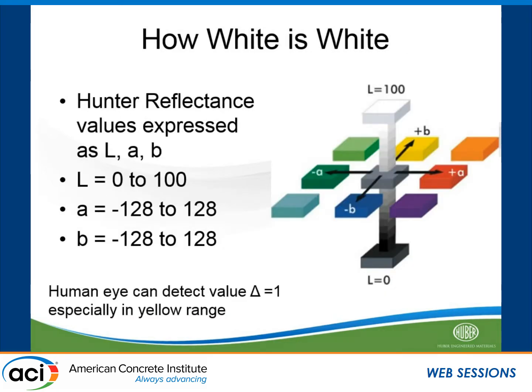So how white is white? In the concrete world, we really don't talk about color as much as we do for calcium carbonate producers, as we do in plastics and other things. What we use is what's known as a hundred reflectance, and there are three different values: the L, A, and B values. The L goes up to a hundred down to zero, and obviously the higher the L value, the closer you are to white, just as the A and B values measure different colors. The human eye can detect a delta value of one in these values, especially with the B values in the yellow range.